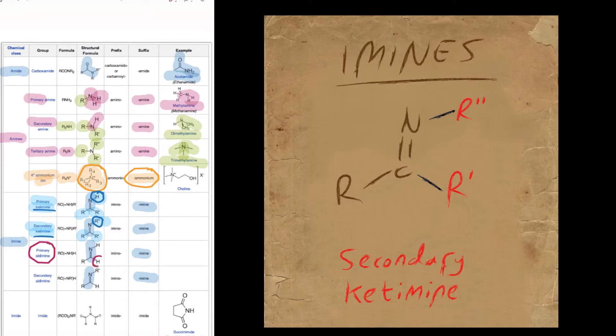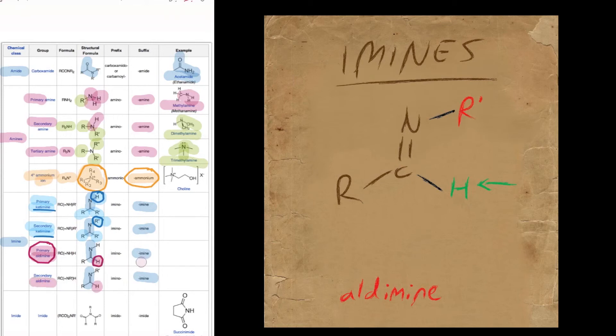Looking on to the next series, the aldimines. Aldimines have a hydrogen connected to the carbon there, and the difference between the primary and secondary again is just whether that nitrogen has got a hydrogen or an alkyl group stuck on it. But the aldimines will always have a hydrogen stuck to the carbon. Just to re-emphasize, we've got the primary and secondary aldimines denoted by either a hydrogen there for primary or an alkyl group there for the secondary—that is the only difference between the two.